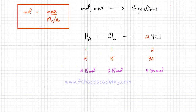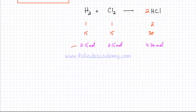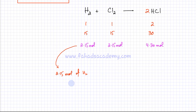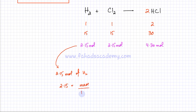Once we know the moles of all substances in the equation, we can convert to mass using moles equals mass over Mr or Ar. For 2.15 moles of H₂: the Mr of H₂ is 1 + 1 = 2. Making mass the subject, mass equals 2.15 × 2, which gives 4.30 grams. So the mass of H₂ used in this equation is 4.30 grams.